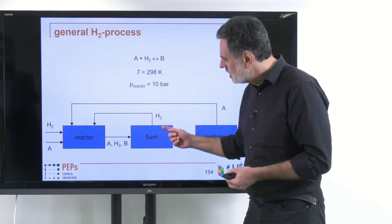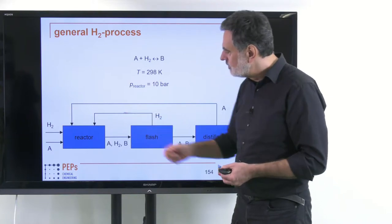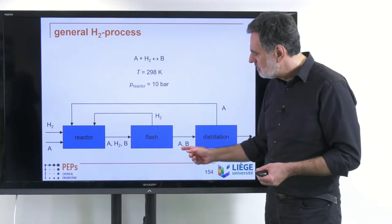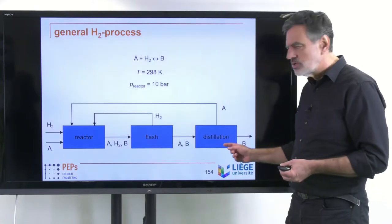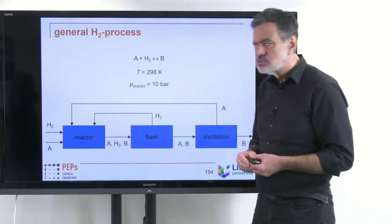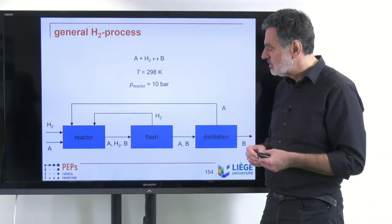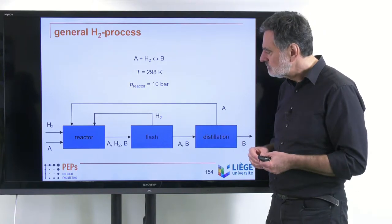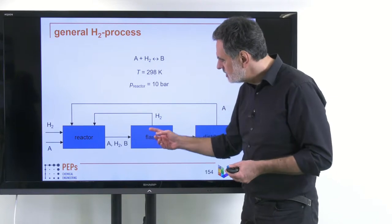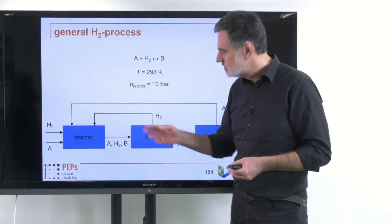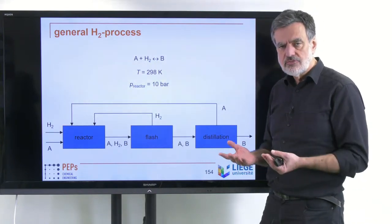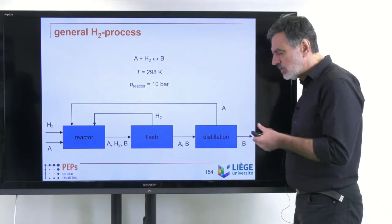Then in a flash evaporation you remove the hydrogen and recycle it back into the reactor. Afterwards you have only components A and B, separate them by distillation, and recycle A so it can go through the reactor again until everything has reacted. Of course, this requires a pressure decrease and pressure increase at different stages. These recycle streams all relate to some additional energetic effort required.